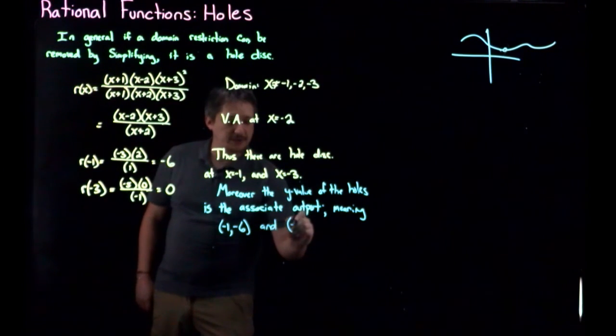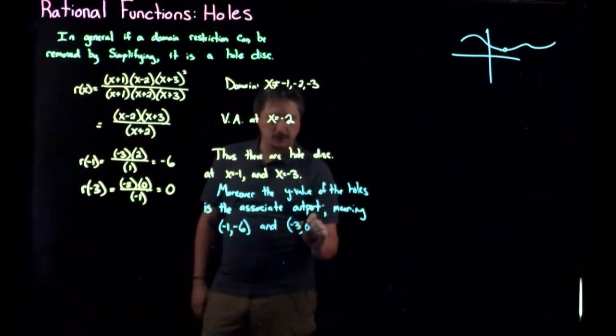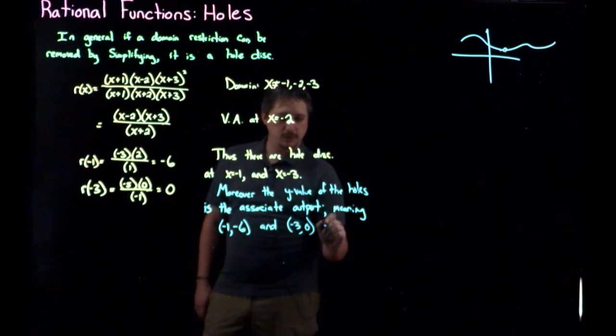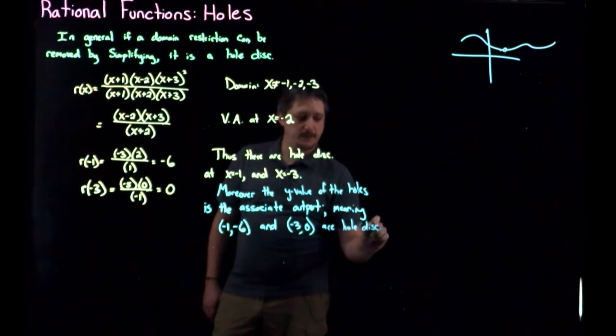meaning we have the hole, so we have a hole at negative one, so we have a hole negative one comma and the actual thing we got when we calculated it, negative six. And likewise, we have a hole at negative three and the output which was zero is the y value. These points are hole discontinuities, okay?